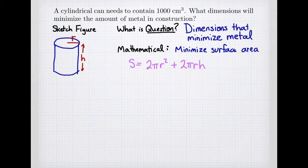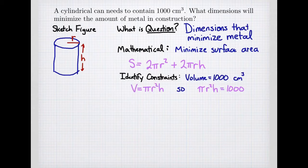We want to somehow minimize the surface area. But I want to point out that this formula has two variables, both the radius and the height. When we do our maximization and minimization, we only know how to do it with one variable.